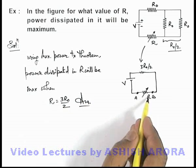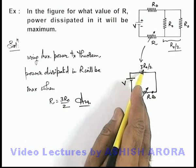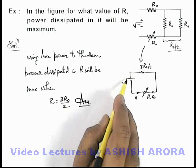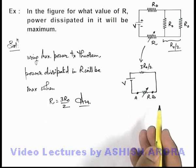That means when the value of this R is equal to 3R_not by 2, the power supplied by the source to the external resistance will be maximum.